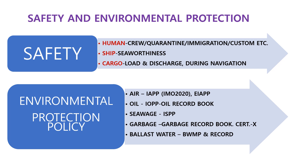What is Safety and what is Environmental Protection? Safety has three kinds: for human, for ship, and for cargo. For human safety, including crew, quarantine officers, immigration officers, custom officers, repairmen, supply, and any other persons — everybody on board should be controlled by the ship's crew. Ship safety means seaworthiness. Cargo safety covers loading, discharging, and during navigation.